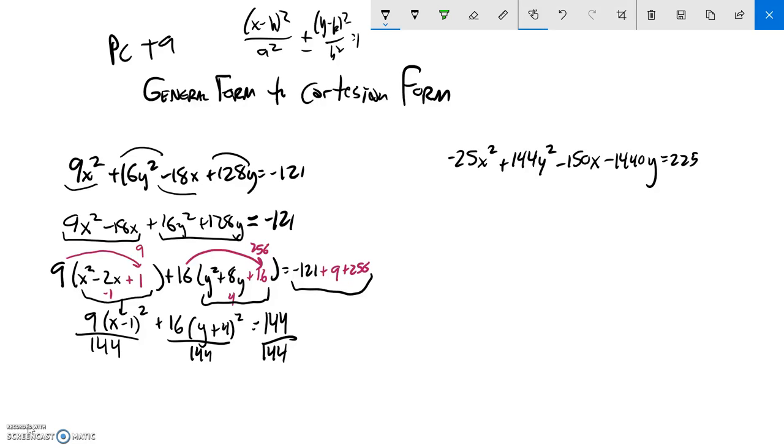And 9 divided by 144, that leaves me a 16 down in the denominator. Plus 16 divided by 144, that's going to leave me a 9 down there. If I reduce that 16 over 144, equals 1.